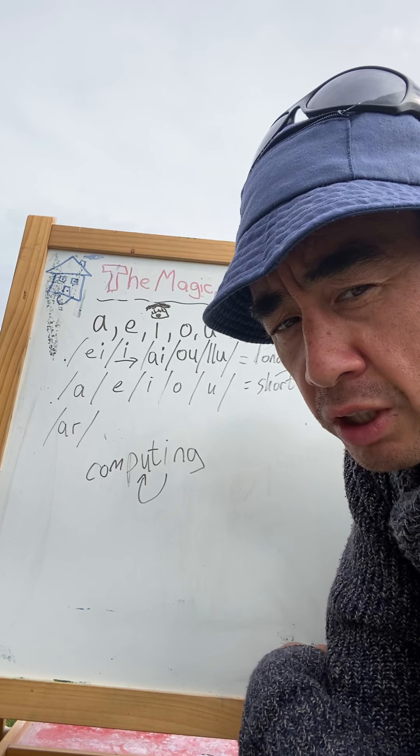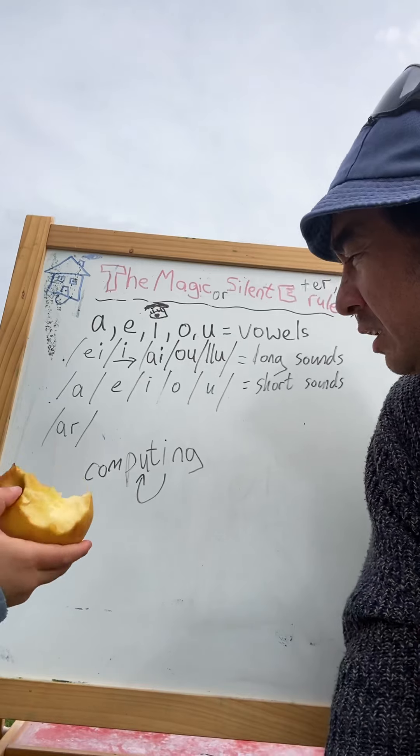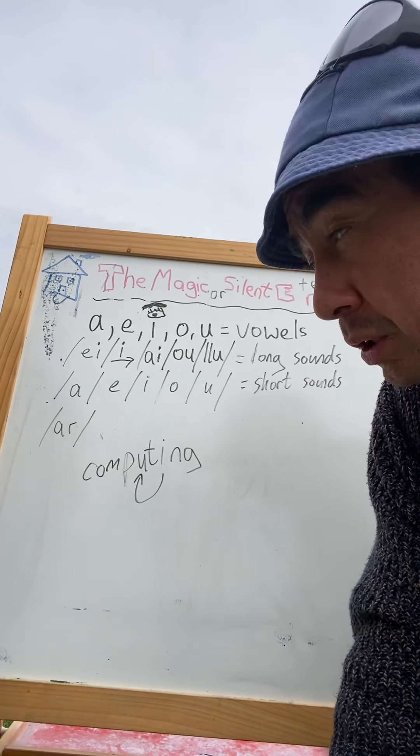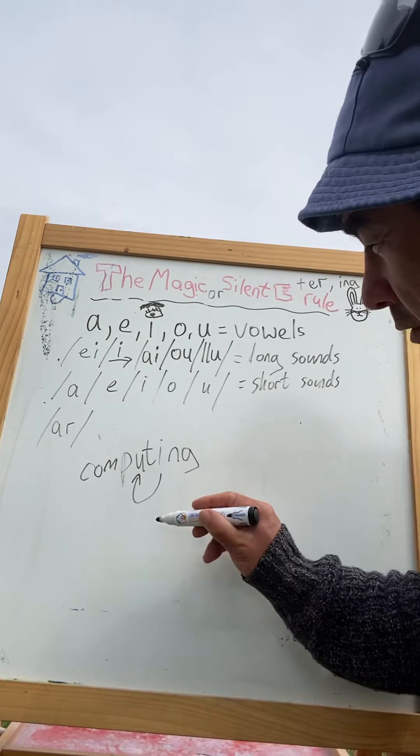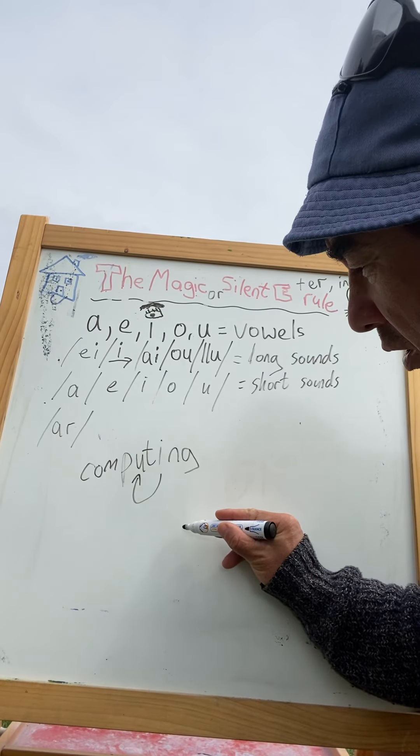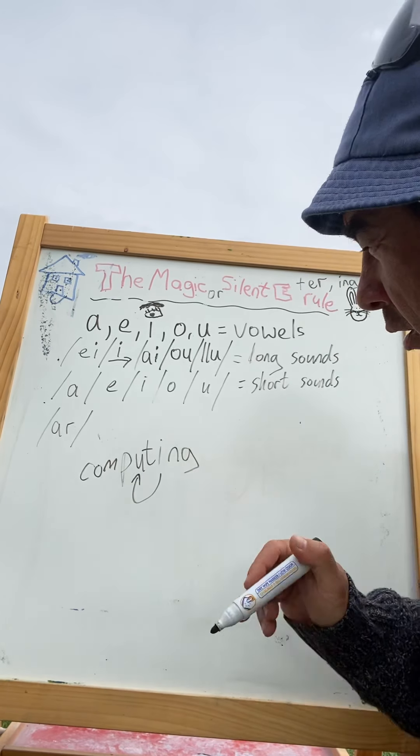Computer. It's not a computer, is it? It's a computer, because the e is affecting the penultimate letter, the vowel, consonant, vowel, e-i-n-g rule.